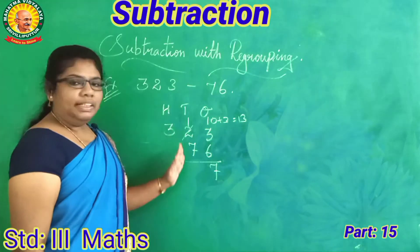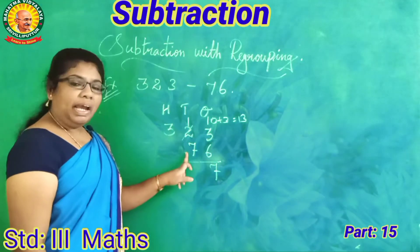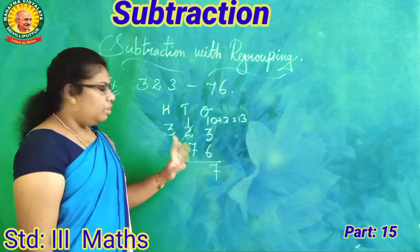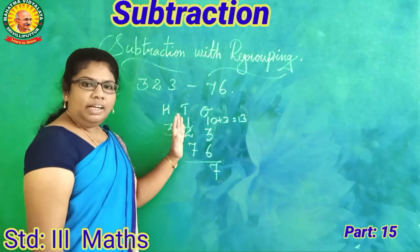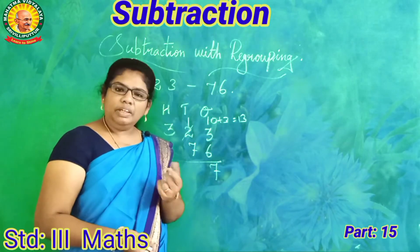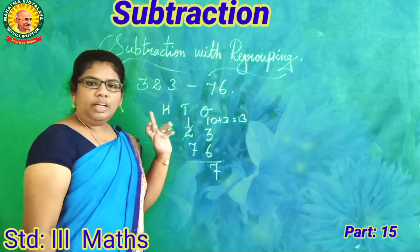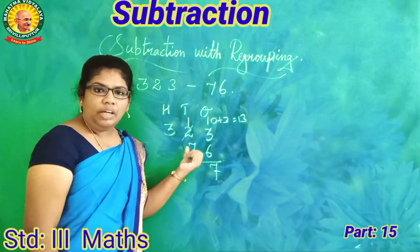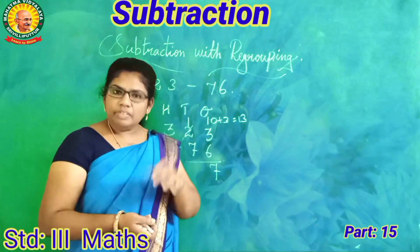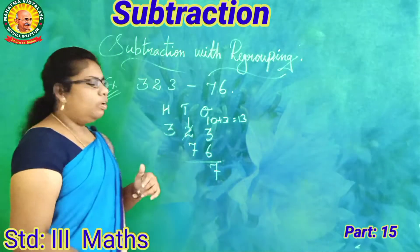Super. Next, look at the tens place. Tens place, one ten minus seven tens. One ten minus seven tens. Can we subtract? One chocolate, our friend wants seven chocolates. Can you give them? No, no.